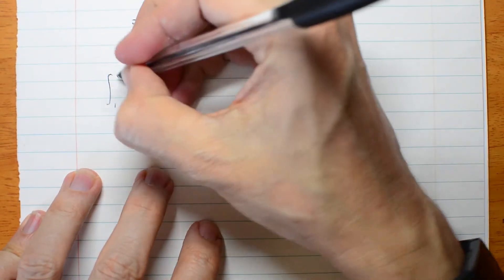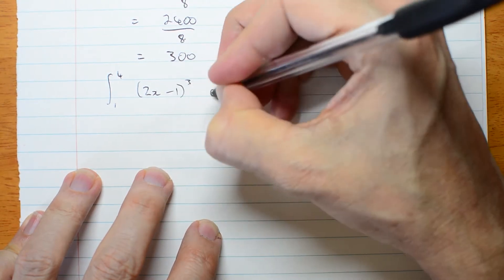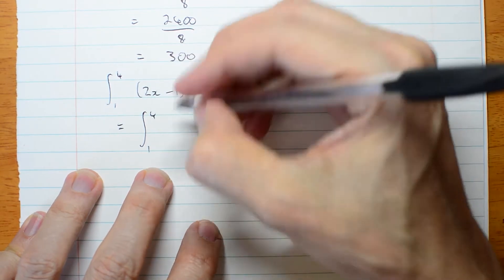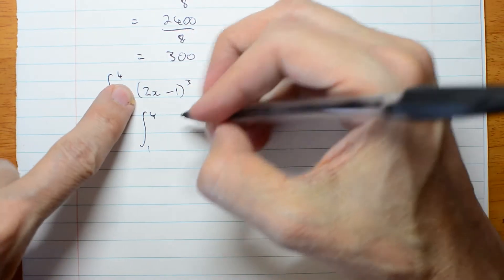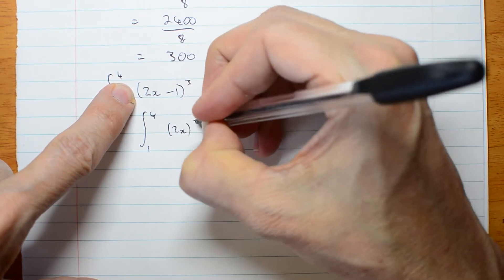The integral from 1 to 4 of 2x minus 1 cubed dx. Let me expand that brackets. First one cubed, 2x cubed,